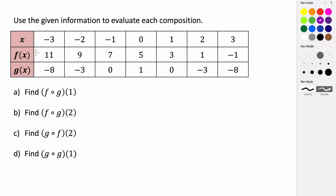In this example, we're given a table of values that gives us two different functions, f of x and g of x, and shows us the different outputs that occur for given inputs. We want to use this table to evaluate four different compositions.